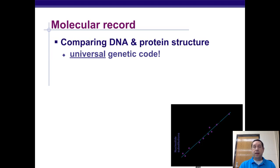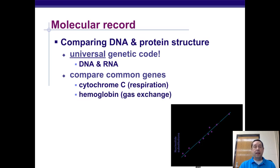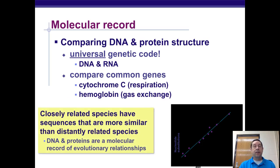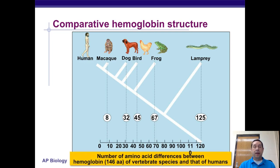The molecular record looks at comparing DNA and protein structures. The genetic code is essentially universal. DNA and RNA are examined for common genes — cytochrome C, used in respiration, is one commonly studied gene, as is hemoglobin. By looking at the sequences of these genes or proteins and counting similarities and differences, we can create a cladogram of different species. The more similarities and fewer differences, the more likely those organisms are closely related.